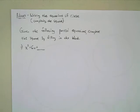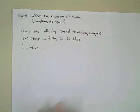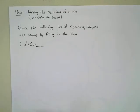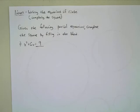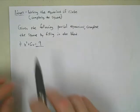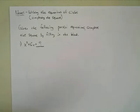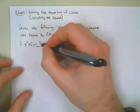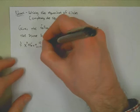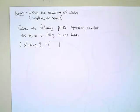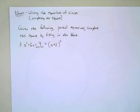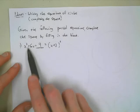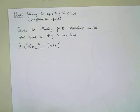We can't just pick any old number — there's only one particular number that would complete this square. It's got to be 9. The middle term has to be 3x plus 3x, which means you need a 3 there, and 3 times 3 gives you 9. So x squared plus 6x plus 9 is the perfect square of x plus 3, quantity squared.